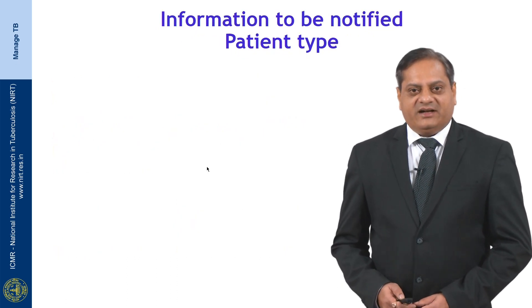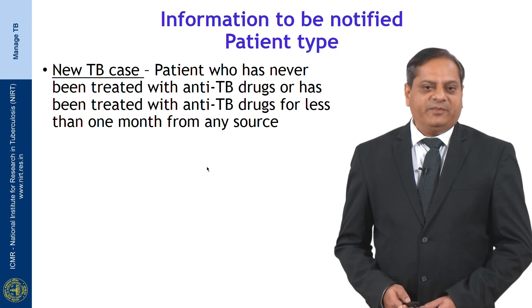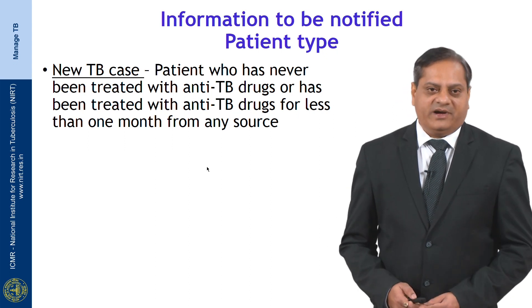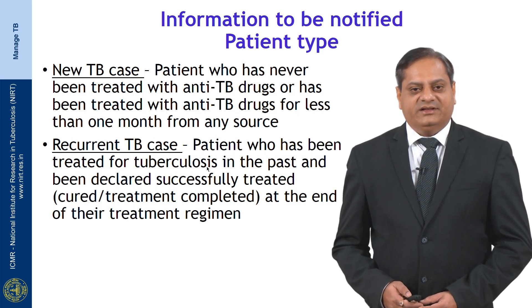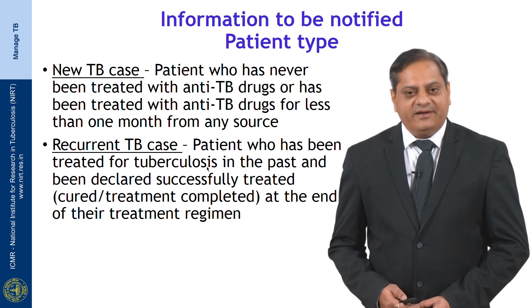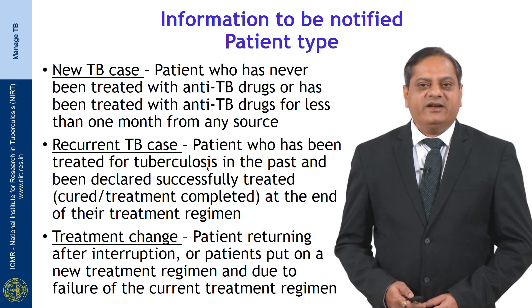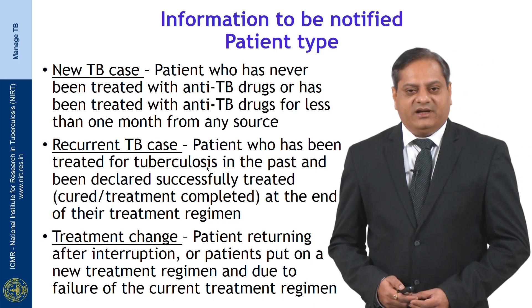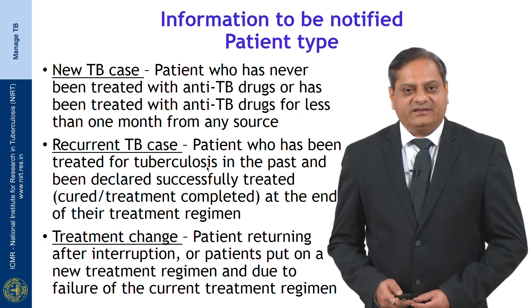The type of patient must also be reported. There are three types included in the notification. First is a new TB case: a patient who has never been treated with anti-TB drugs or has been treated for less than one month from any source, public or private. Second is a recurrent case: a patient treated for tuberculosis in the past and declared successfully treated, including cured patients and those who completed treatment. Third is treatment change: patients returning after interruption or put on a new treatment regimen due to failure of the current regimen.